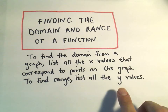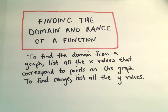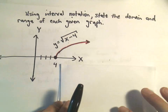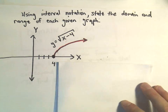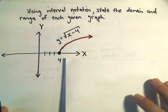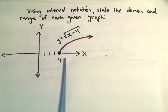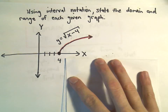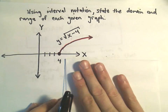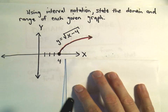To get the range we simply list all the y values that ever get used on our graph. Finding domain and range from a graph isn't terrible. It's when you only have a formula that it's a little harder. So I've already written out the answer and have them covered up here for a second.